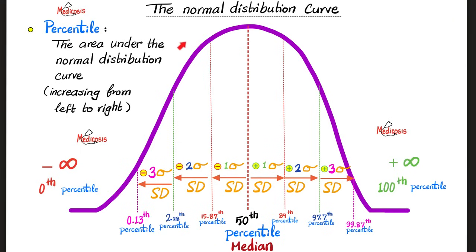This is a symmetrical normal distribution curve, also known as a bell-shaped curve, otherwise known as the Gaussian curve, named after the German mathematician Karl Friedrich Gauss. This is the mean, and the median, and the mode, and the 50th percentile, as long as this is a symmetrical normal distribution curve. Then we talk about the spread or the variance — you can go above the mean or below the mean. This is one standard deviation above the mean; this is one standard deviation below the mean.